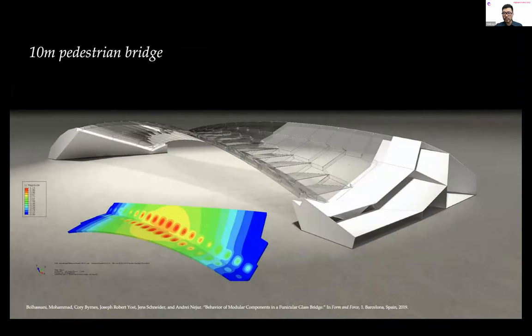We physically tested the mechanical performance of this hollow glass unit, and it showed very impressive load bearing compression capacity. As Masoud mentioned, we've shown it's possible to make a 10 meter pedestrian bridge using this construction unit by leveraging the compression capacity of hollow glass units.